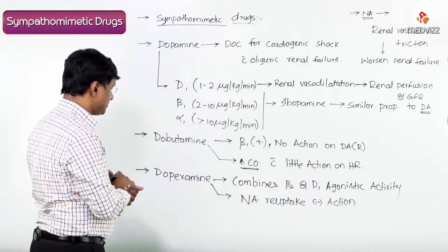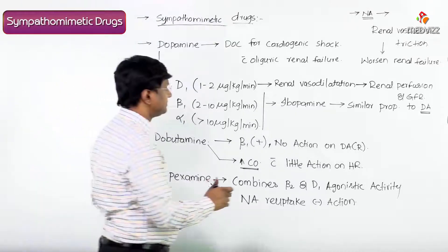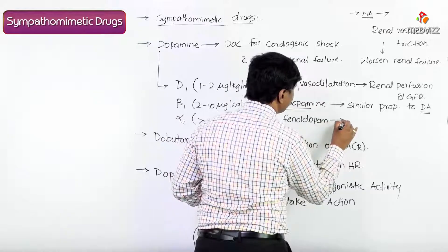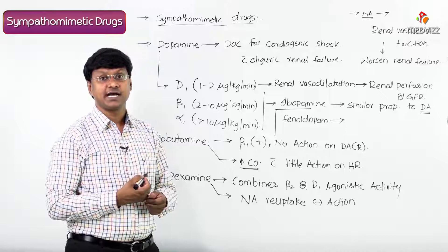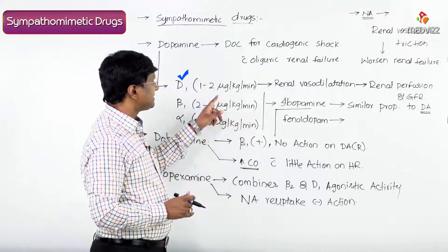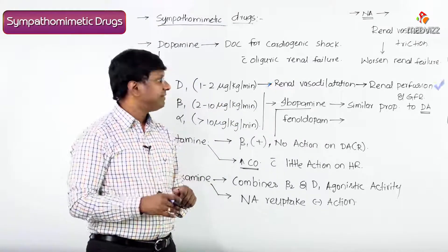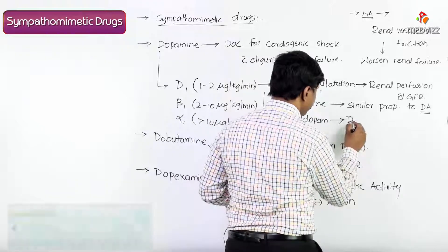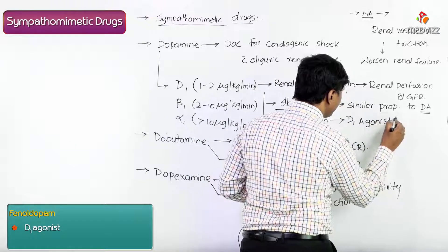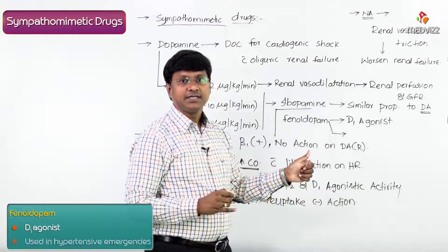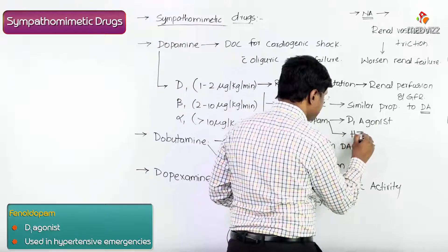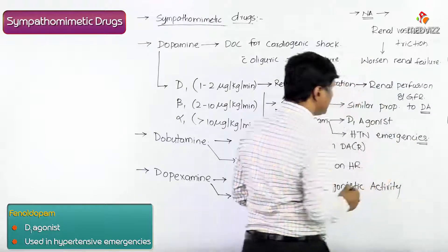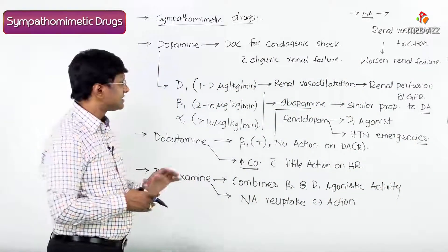Fenoldopam (phenyldopam) is a D1 agonist. When D1 receptors are activated, there is renal vasodilatation with an increase in renal perfusion and GFR. Fenoldopam is therefore useful in hypertensive emergencies.